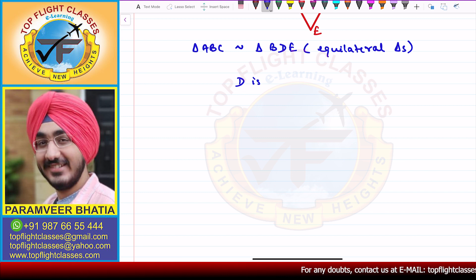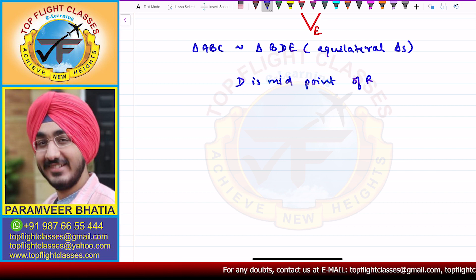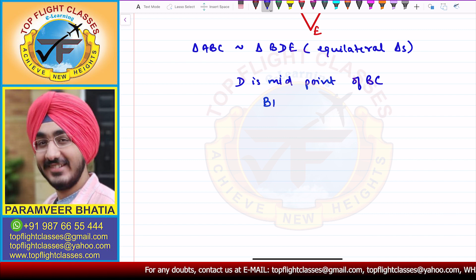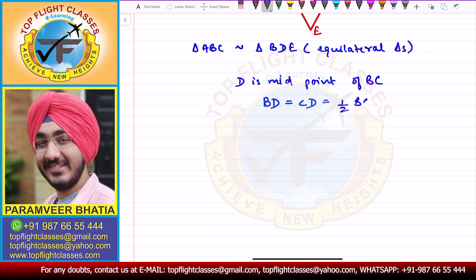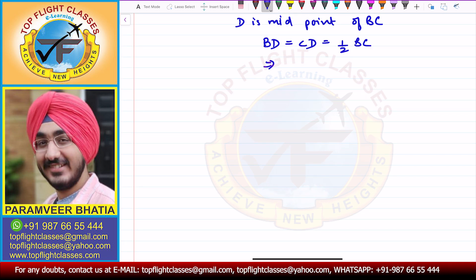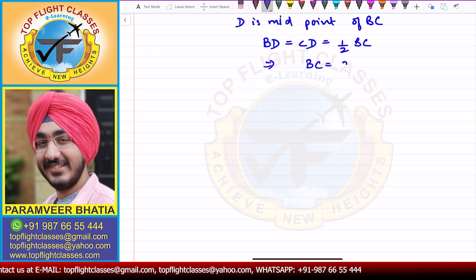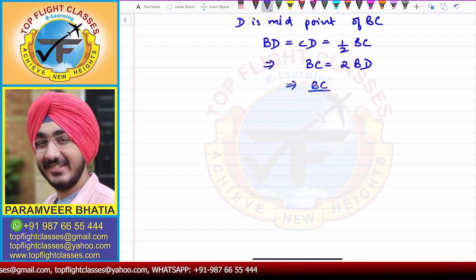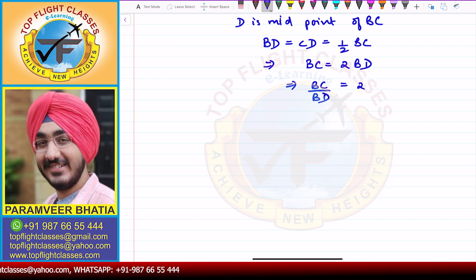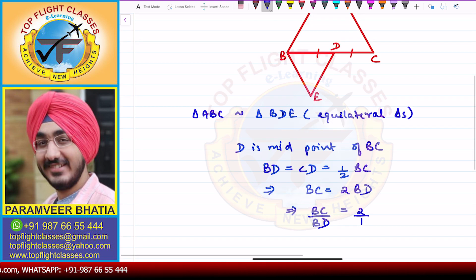Since D is the midpoint of BC, we have BD = CD = half of BC. This means BC = 2 times BD, and therefore the ratio BC to BD equals 2 to 1.